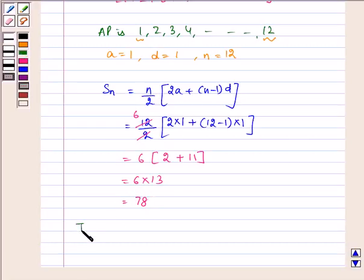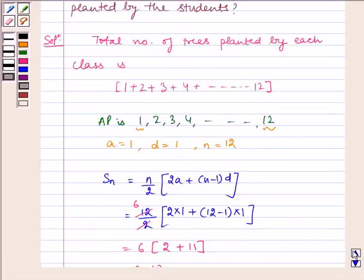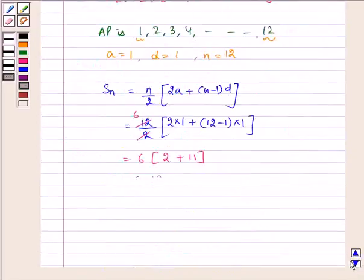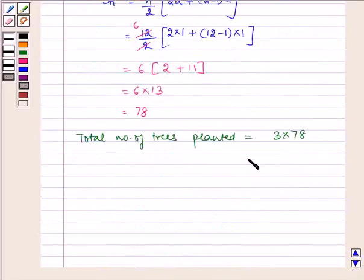Now, total number of trees planted is equal to 3 multiplied by 78 because there are 3 sections of each class, which is equal to 234.